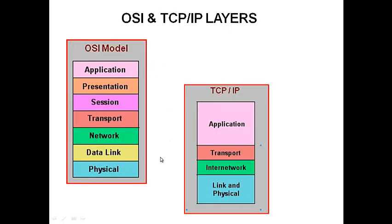In layman's terms: you boot up your laptop and connect it to a LAN. First, you plug in your cable — that describes the physical layer. The network then learns your device by sending an ARP (Address Resolution Protocol) message and learns your MAC address — that takes place at the data link layer. Then, via DHCP, the network assigns you an IP address — that takes place at the network layer.